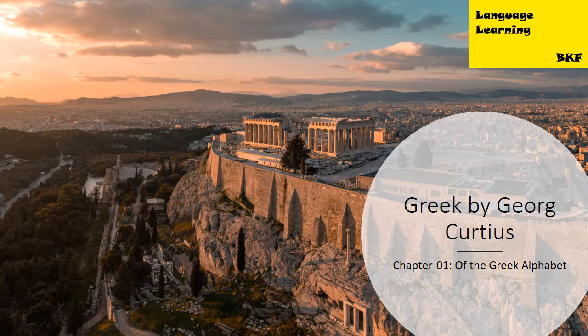Nevertheless, down to the latest times, the greatest confusion has been caused, even by clever and learned men, because they have allowed themselves to be misled by the old method of writing in which E, as is well known, represents both the long and the short vowel, into the idea that in certain cases the long vowel could arise out of the short one.